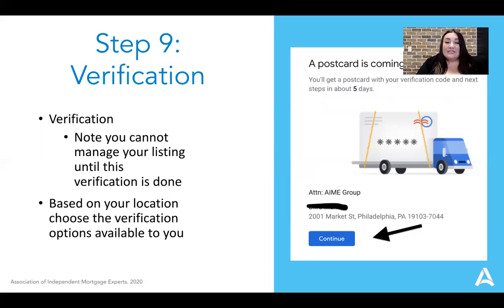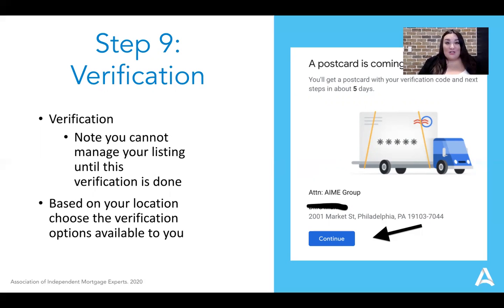Now this is going to trigger Google verifying your business address. They do this by sending you a postcard to your mailing address to make sure that you're actually a real business in the location you've mentioned. So making sure you've input all the correct information is incredibly important. Once you get this postcard, you're going to type in a verification code that tells Google you received the card, it went to the right address, and you are who you say you are.